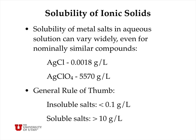As a general rule, the solubility of metal salts can vary widely, even for compounds which look similar. For example, silver chloride has a very low solubility, but silver perchlorate has a very high solubility. As a general rule of thumb, if the solubility of a salt is less than about 0.1 grams per liter, we call that an insoluble salt. If the solubility is greater than about 10 grams per liter, then that's a soluble salt. Everything else in between is a slightly soluble salt.